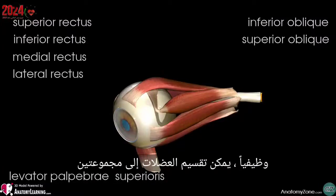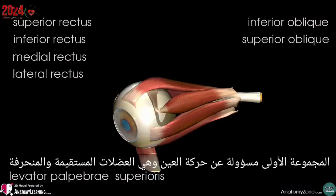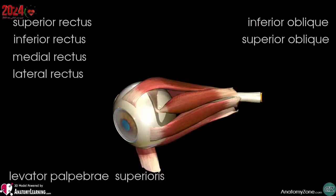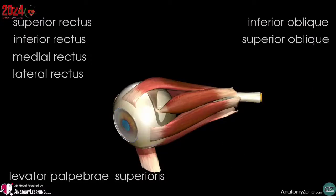Functionally, they can be divided into two groups. The first group is responsible for eye movement — the recti and oblique muscles — and the second group is responsible for superior eyelid movement, that is the levator palpebri superioris.